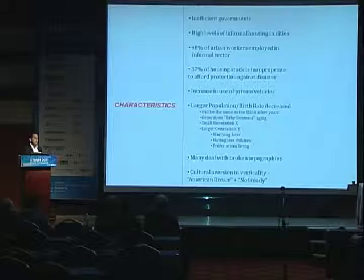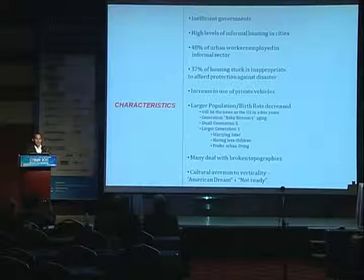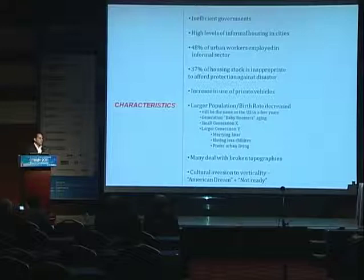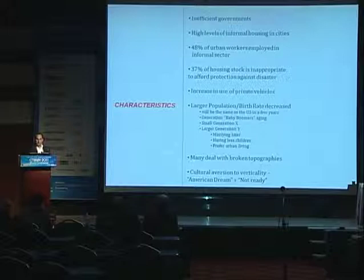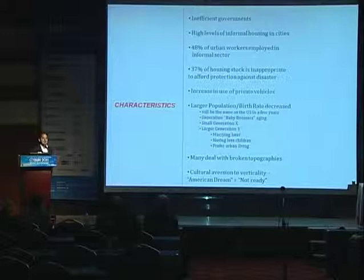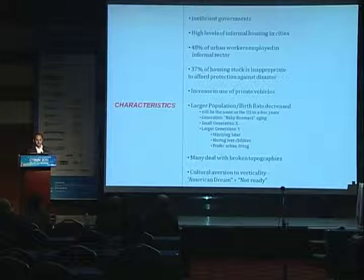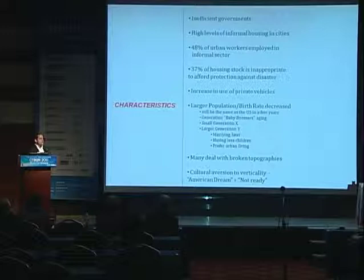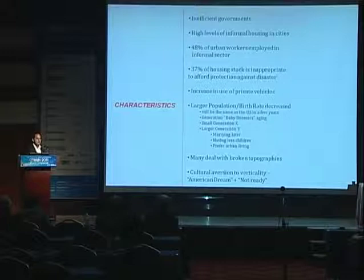These are some of the data we've collected about the situation. For example, we have very inefficient governments — it's really hard to deal with governmental institutions in Latin America. There is a high level of informal housing. 48% of urban workers are employed in the informal sector, meaning they don't pay taxes and it's really hard to locate them. Also, 37% of housing stock is inappropriate to afford protection against disaster, because we're building in areas prone to inundations, earthquakes, and mudslides. Even though we have a lot of shanty towns, many of these people actually own cars, and the level of private vehicle use is increasing in many countries.